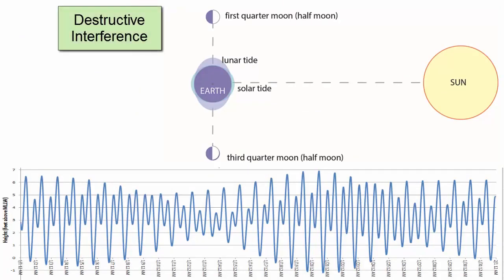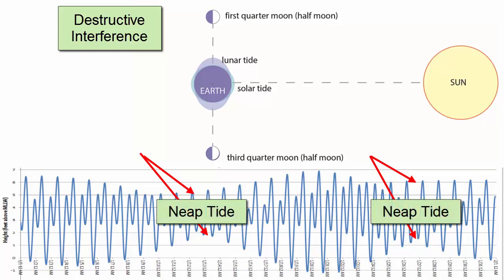When the two bulges are out of phase, which happens when we see half moons, the interference is destructive and the tidal range is at its lowest. The lows aren't so low, the highs aren't so high, neap tides.